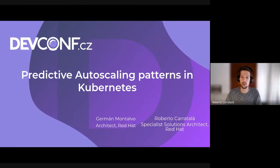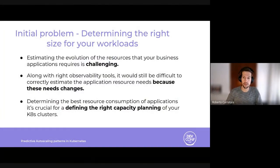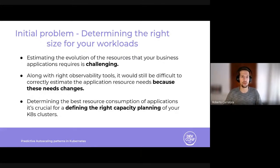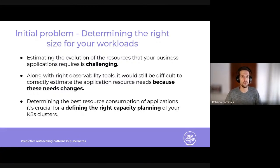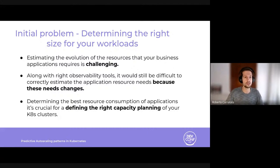We want to talk about predictive autoscaling patterns in Kubernetes. But first, we want to talk about a common problem or issue that we are seeing in a lot of customers and DevOps teams. Determining the right size for your workload and estimating the evolution of the resources that your business application requires is challenging. Along with the different observability tools available, it can still be difficult to correctly estimate application resource needs.